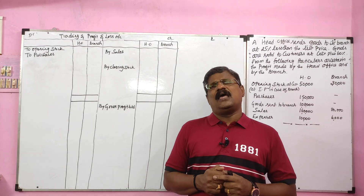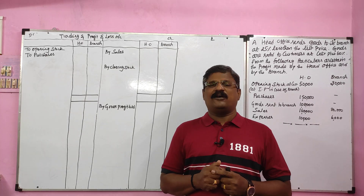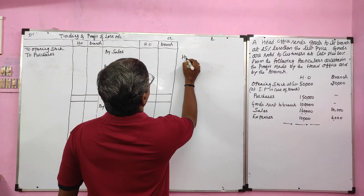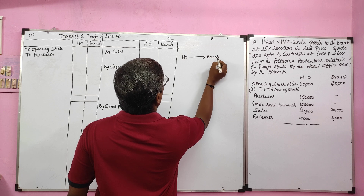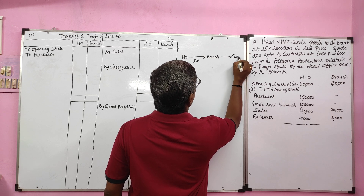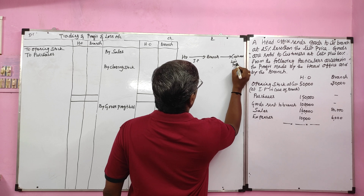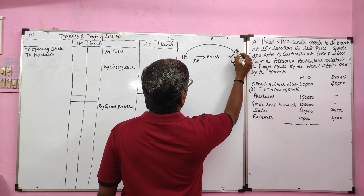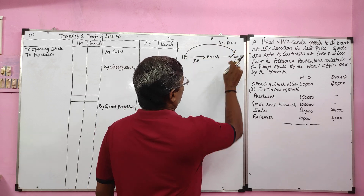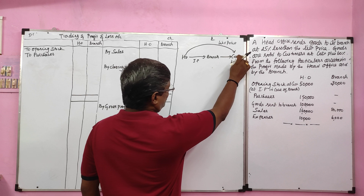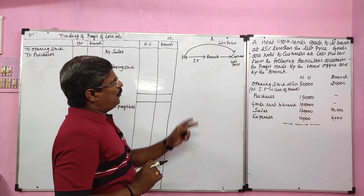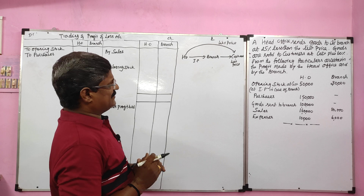Before learning about the wholesale branch system, we should know about two terms: what is list price and what is invoice price. The head office sends goods to the branch at invoice price. The branch sells goods to customers at list price. The head office also sells goods to customers directly at list price. So the customer price is called the list price.